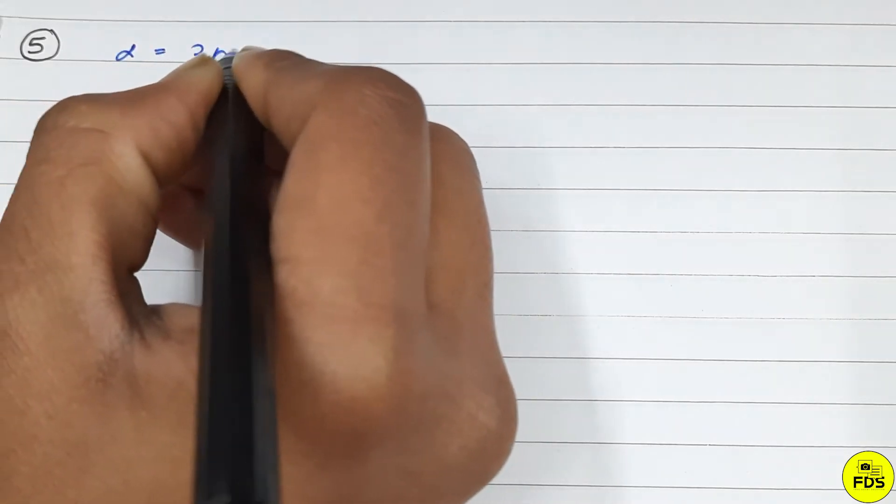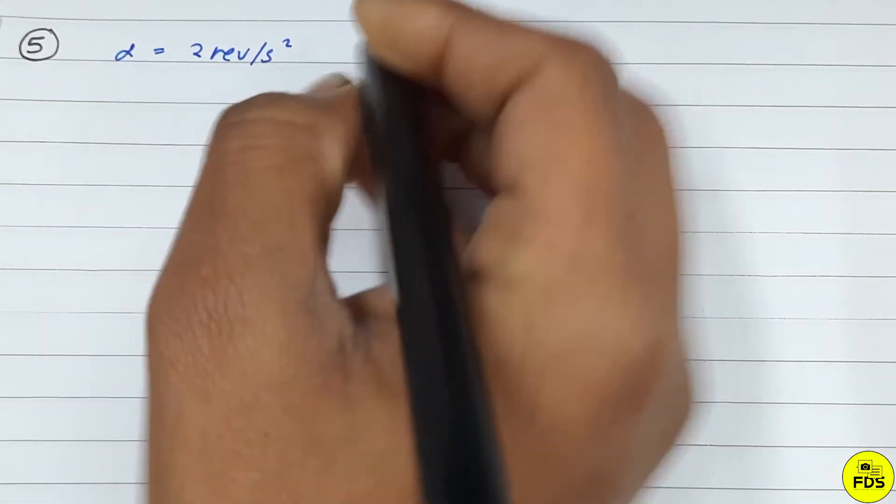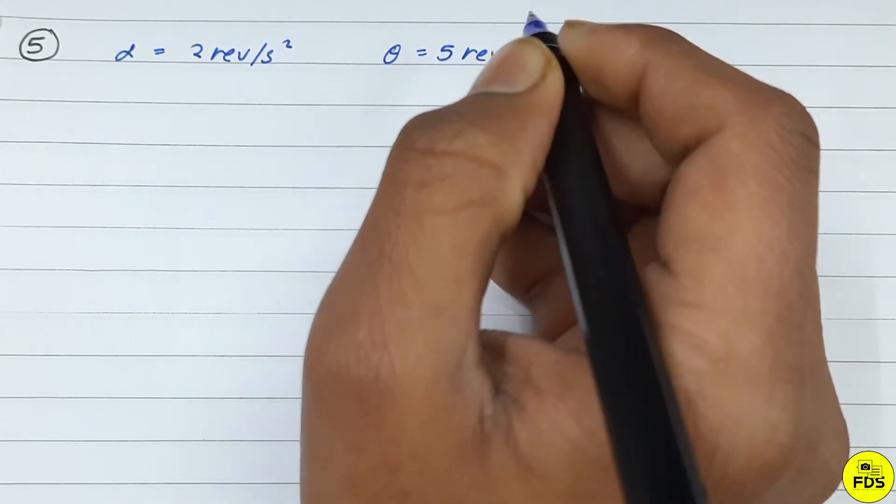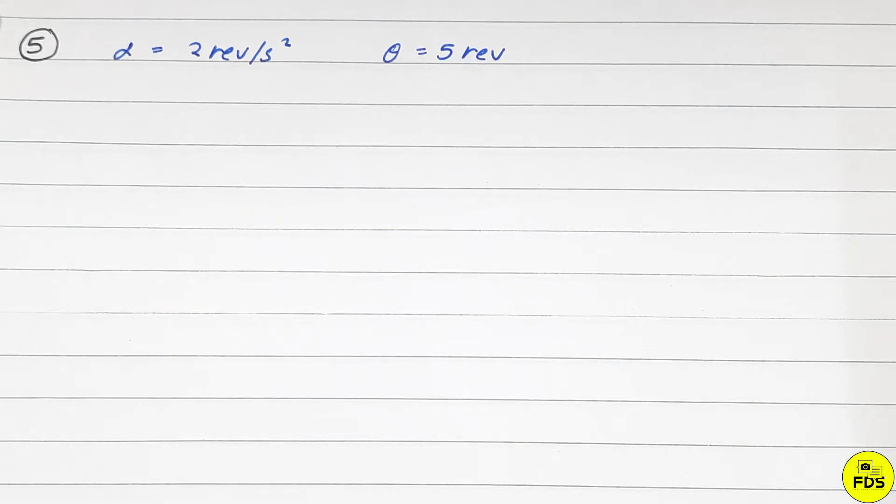We have an acceleration of 2 revolutions per second squared and 5 revolutions. We need to find the final angular velocity.